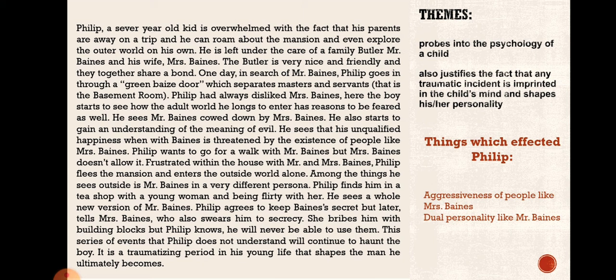Philip had always disliked Mrs. Baines, and here he begins to see how the adult world he longs to enter has reasons to be feared. He sees Mr. Baines being cowed down by Mrs. Baines, whose personality is very intimidating — even Mr. Baines has no say in front of her. Philip starts to understand the meaning of evil; his unqualified happiness with Mr. Baines is threatened by the existence of people like Mrs. Baines. Philip wants to go for a walk, Mr. Baines tries to accompany him, but Mrs. Baines does not allow it.